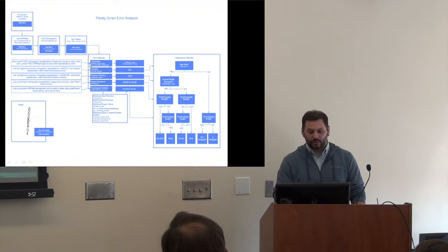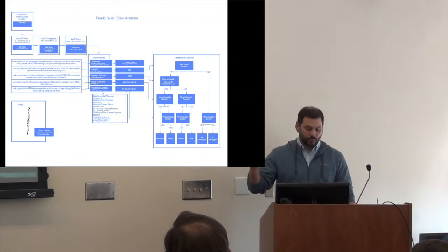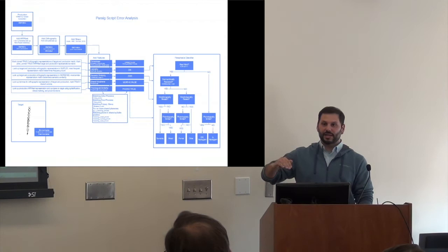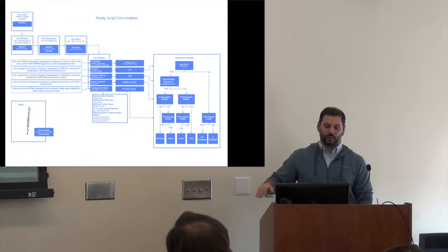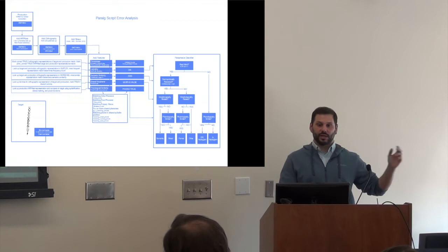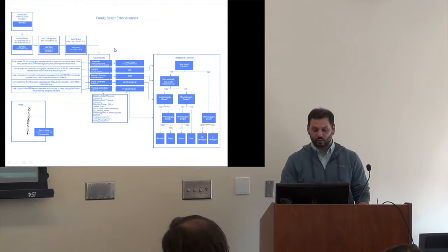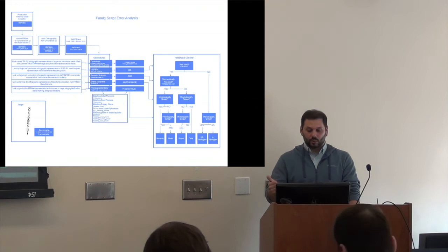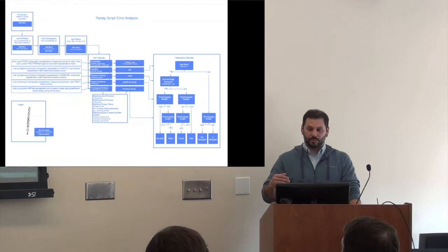We've invested significant effort in making the framework modular, meaning individual components can be swapped out without breaking the rest — for example, substituting a different frequency database or a different semantic similarity method. The system is also optimized to run on a computing cluster, enabling extensive repeated sampling and k-fold cross-validation, which is important both for comparing models and for generating realistic accuracy expectations.